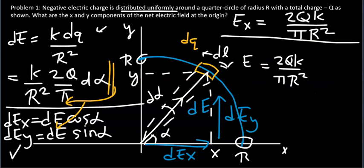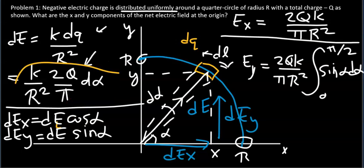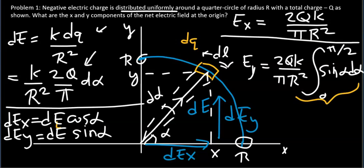For the y-component, dEy = dE·sin(alpha). Substituting dE and taking constants out, Ey = (2Qk)/(pi·r²) times the integral of sin(alpha)·d_alpha from 0 to pi/2. This integral also has a value of 1, giving Ey = 2kQ/(pi·r²).